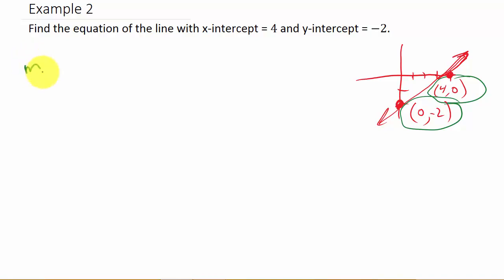So remember your slope is y2 minus y1 over x2 minus x1. Now which point coordinate is x1, y1 and which one's x2, y2? Well, it doesn't matter.